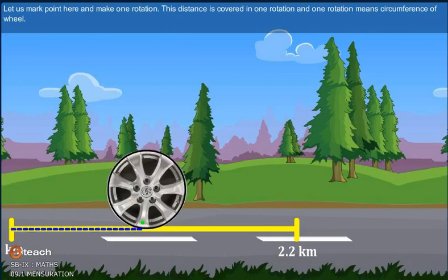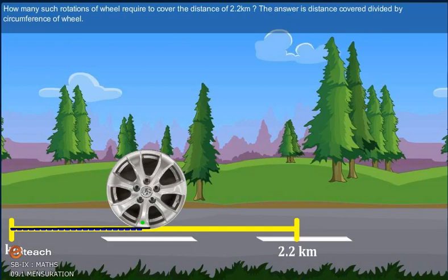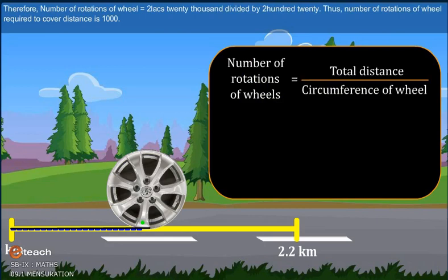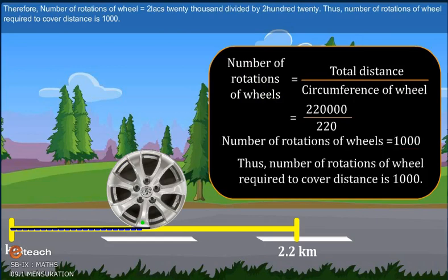One rotation of the wheel covers a distance equal to its circumference. How many rotations are required to cover 2.2 km? Number of rotations = total distance ÷ circumference = 2,20,000 ÷ 220 = 1000. Thus, 1000 rotations of the wheel are required to cover the distance.